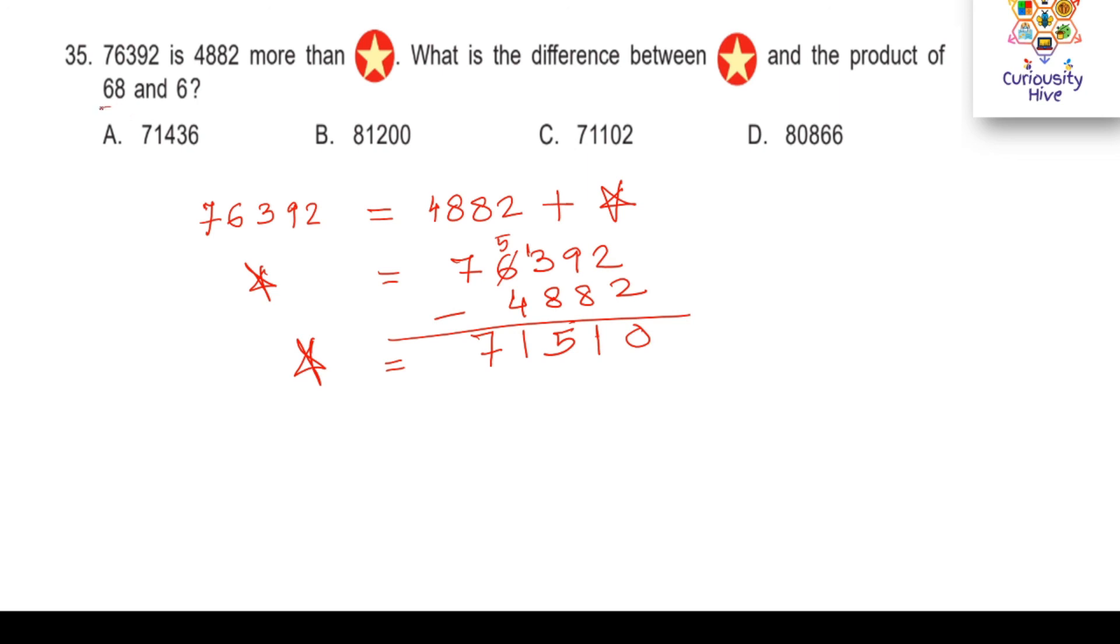My next step is to find the product of 68 and 6 because later I need to subtract that from this value. 68 times 6: 8 times 6 is 48, carry 4, 6 times 6 is 36 plus 4 is 40, so 408. I need to subtract 408 from the star value. Hence, the value that I will get after this subtraction is 71,102, which is option C and is my right answer.